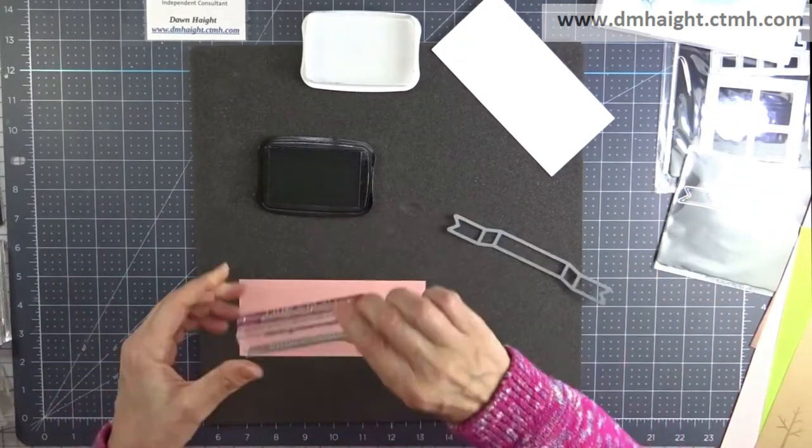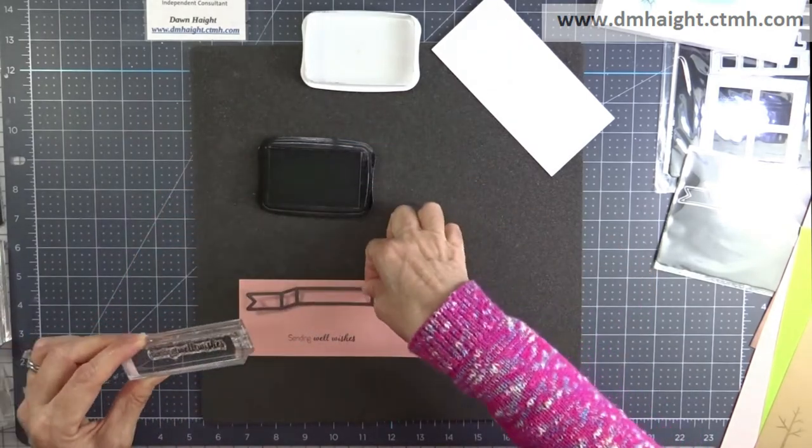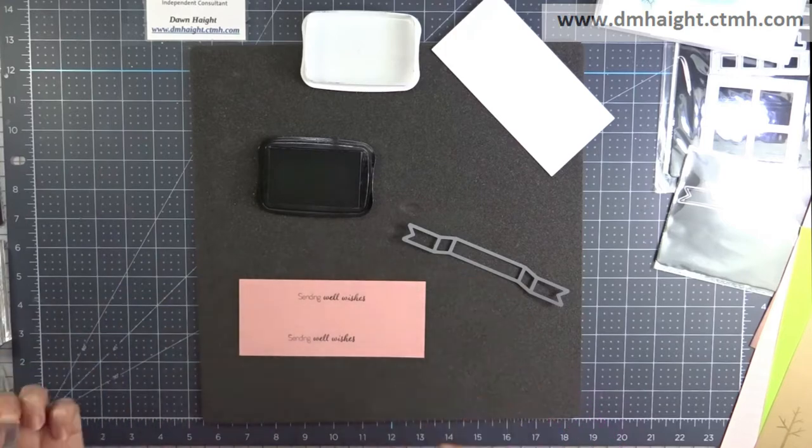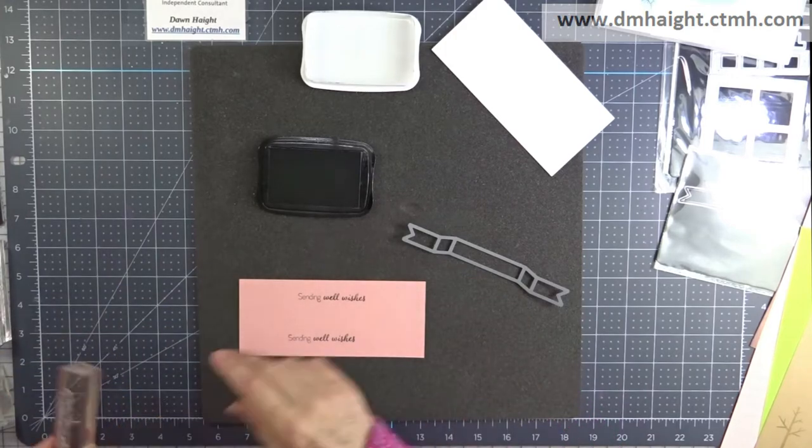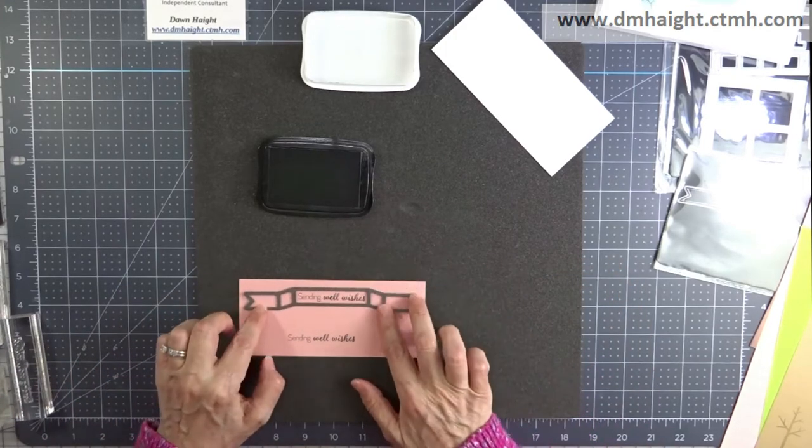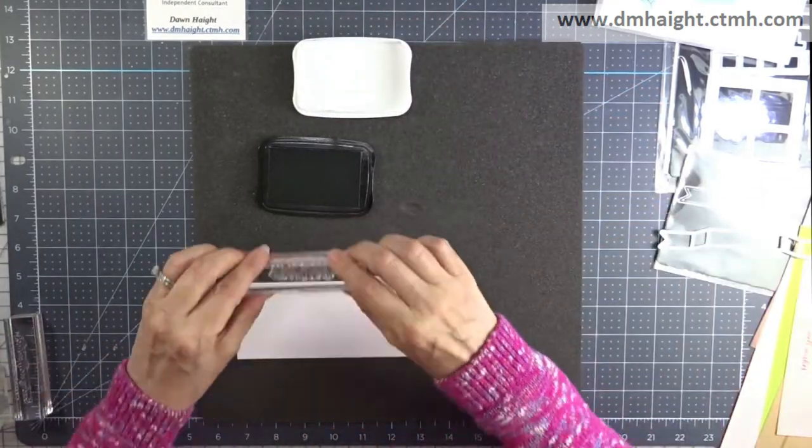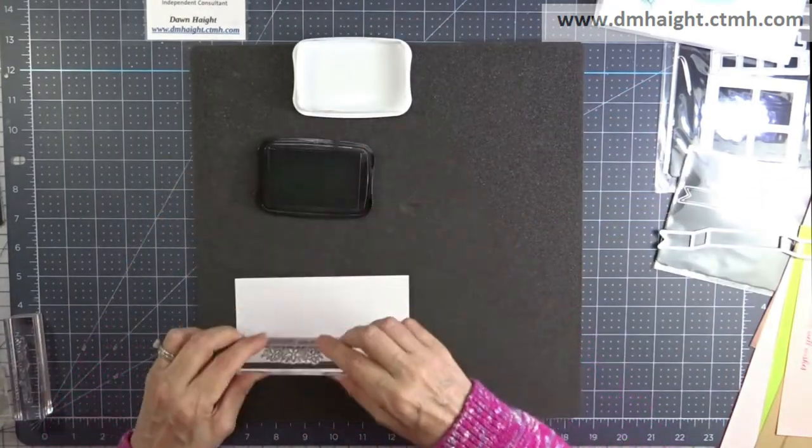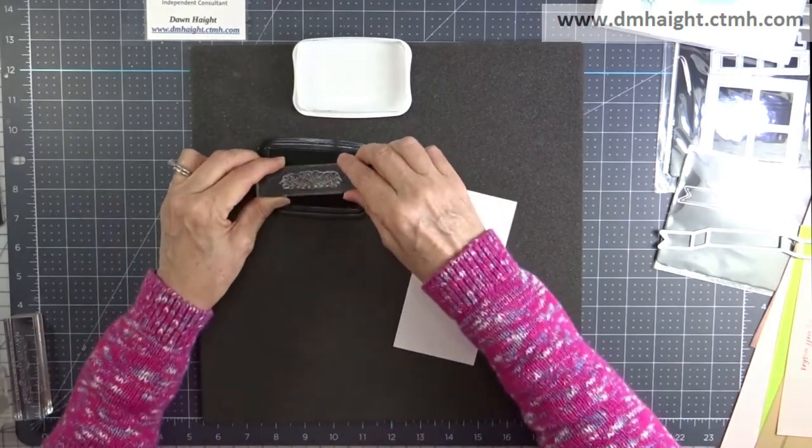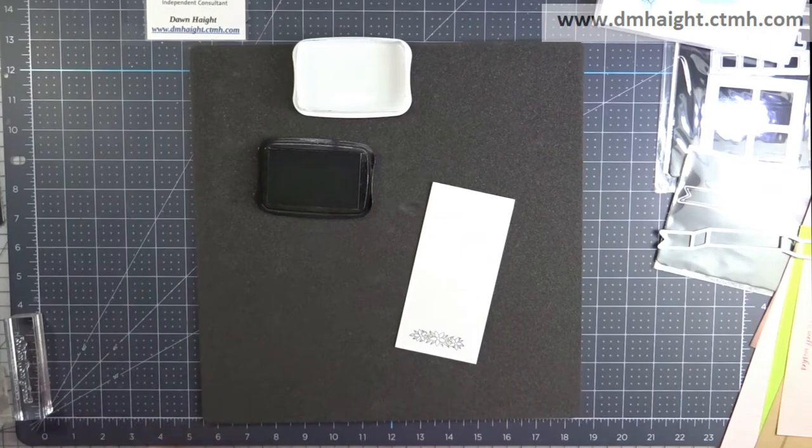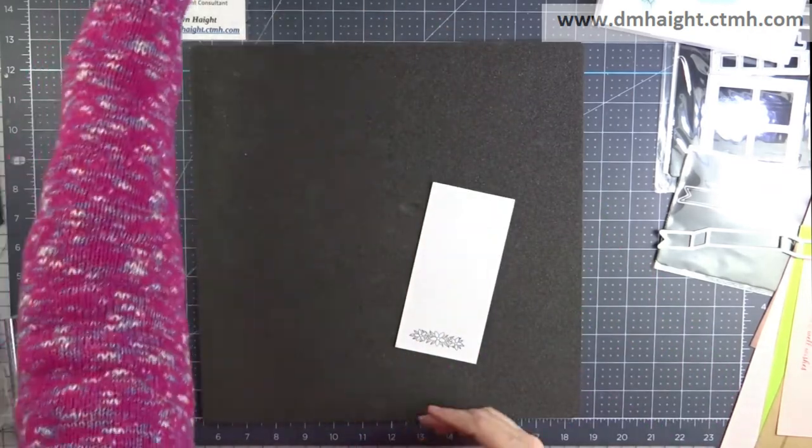So I've cut off the end of that sentiment that says sending well wishes your way and I'm stamping out just sending well wishes. I realized when I stamped it the first time that my thin cut was a little too long so I needed to re-stamp it so that I could fit that thin cut to cut it out. And then this is a floral image from that same sending well wishes stamp set.